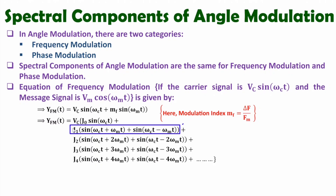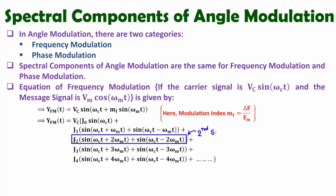With the first sideband, the Bessel's coefficient is J1. The upper sideband has frequency ωc + ωm, and the lower sideband has frequency ωc − ωm. The second sideband has coefficient J2, with upper sideband frequency ωc + 2ωm and lower sideband frequency ωc − 2ωm. Likewise, we have third and fourth sidebands, with Bessel's coefficients J0, J1, J2, J3, J4 respectively.